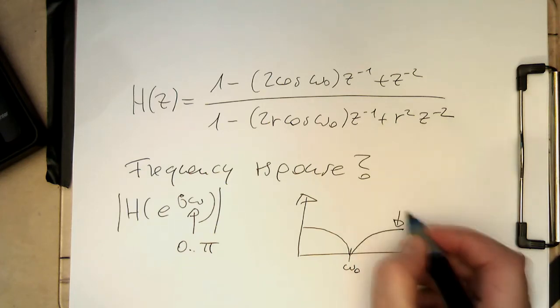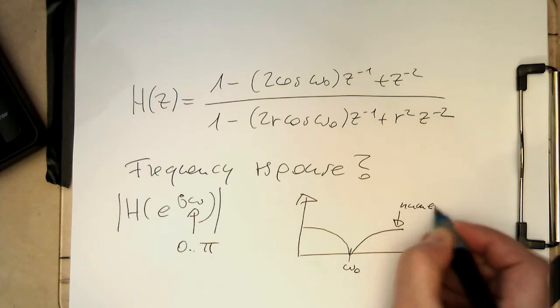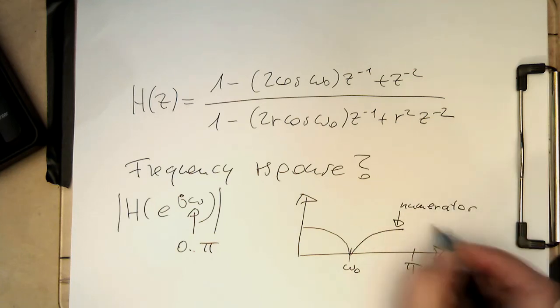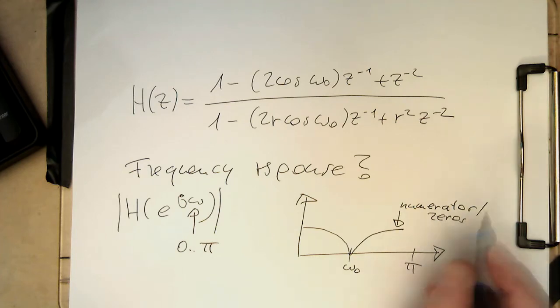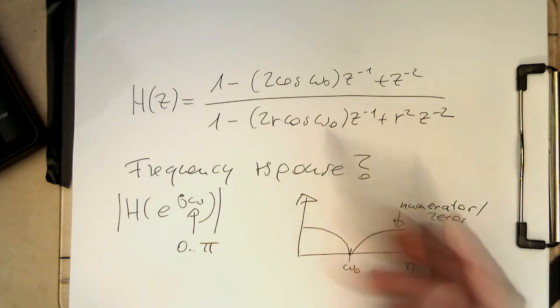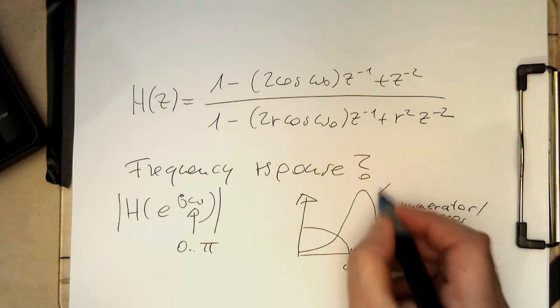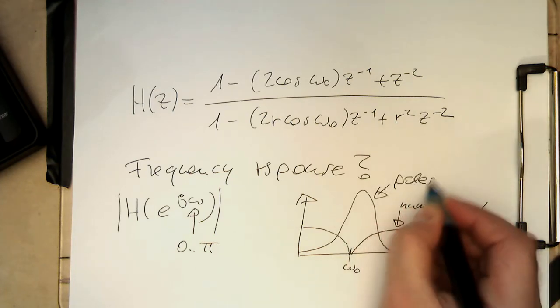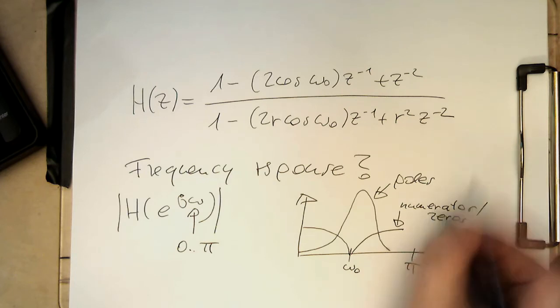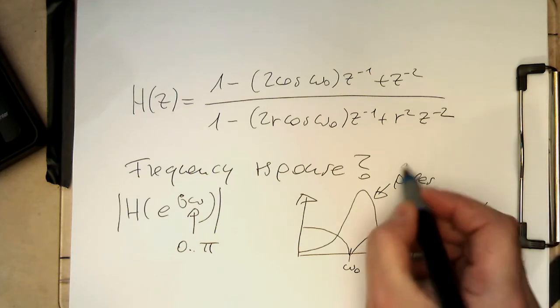So this gives us, this is a numerator response or the zeros. Then we know that this one generates a resonance at omega zero. So then this one goes like that. So that's generated by the poles or by the denominator.